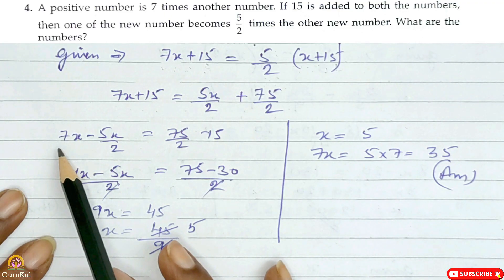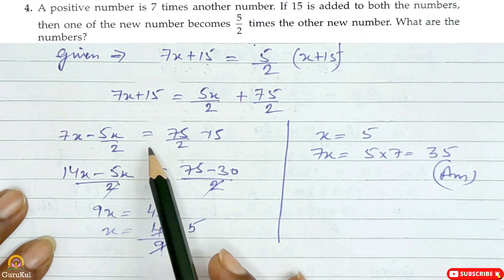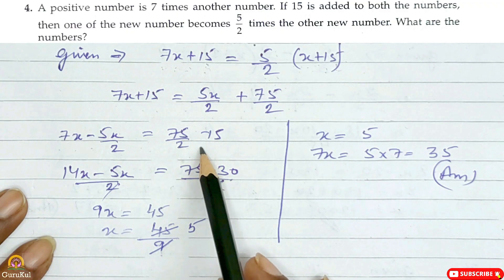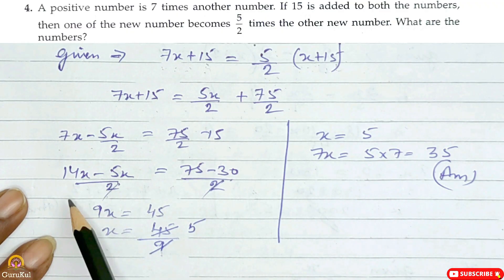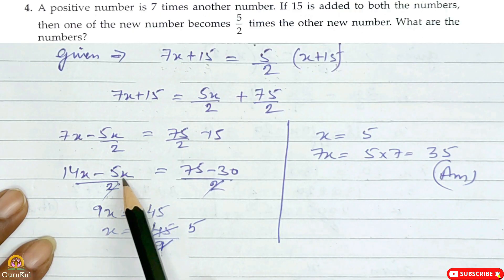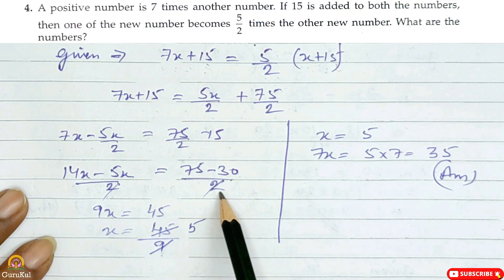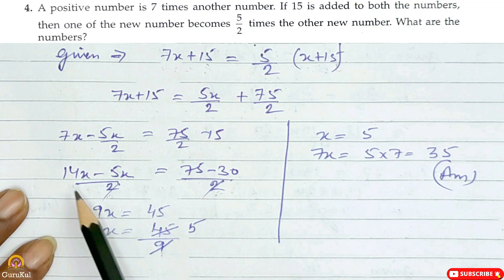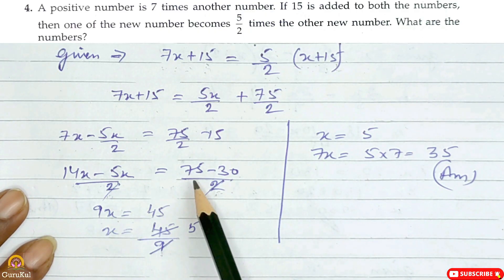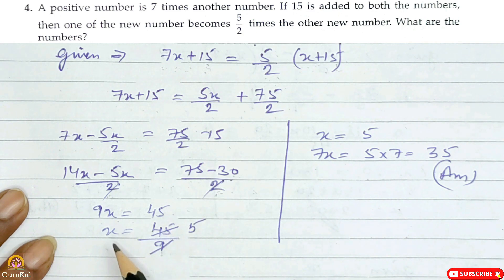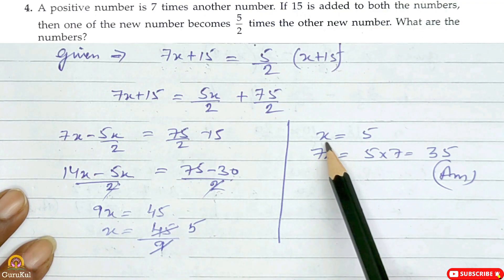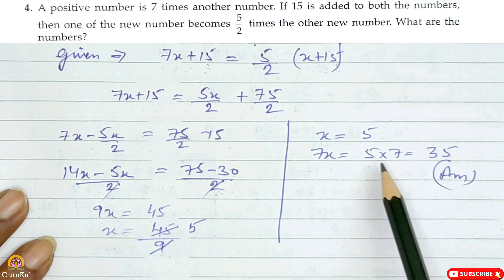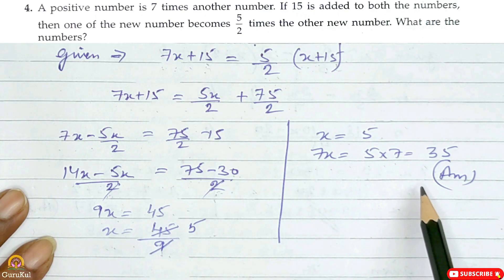Bring all x to one direction: 7x minus 5x/2 is equal to 75/2 minus 15. Taking LCM: (14x minus 5x)/2 is equal to (75 minus 30)/2. Both denominators cancel: 9x is equal to 45. Hence the value of x is 45/9 which is 5. So 7x is equal to 5 × 7 which is 35. This is the answer.